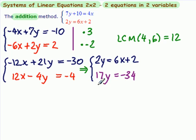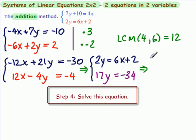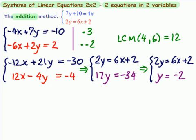We have what we need, an equation in one variable. Rewrite our dragger. Here's our dragger. 2y equals 6x plus 2. And now, clean up this one, divide both sides by 17. So, minus 34 divided by 17 is minus 2. So, we have our value for y.